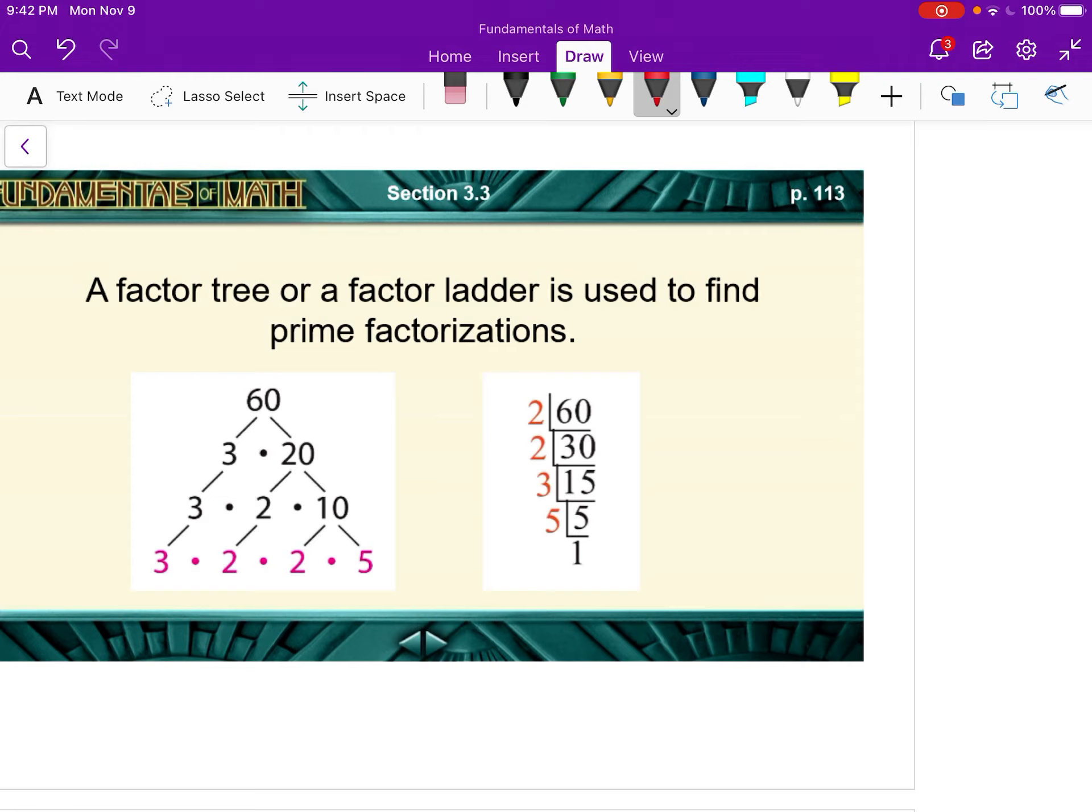There are two methods to help us find prime numbers. The one on the left is called a factor tree. Now the factor tree for 60 doesn't always have to look like that. There's other ways to go about it. So 60 is 3 times 20, but you could have started as 60 is 2 times 30.